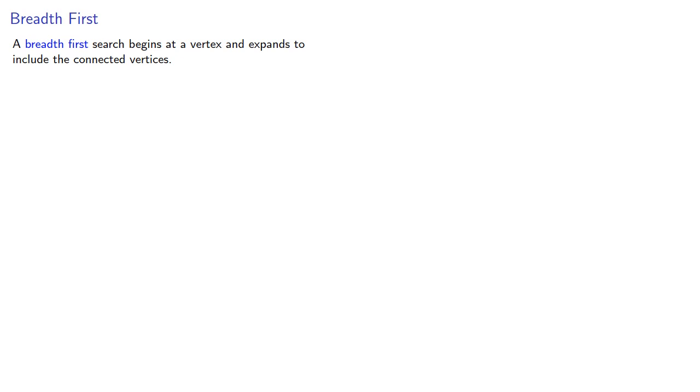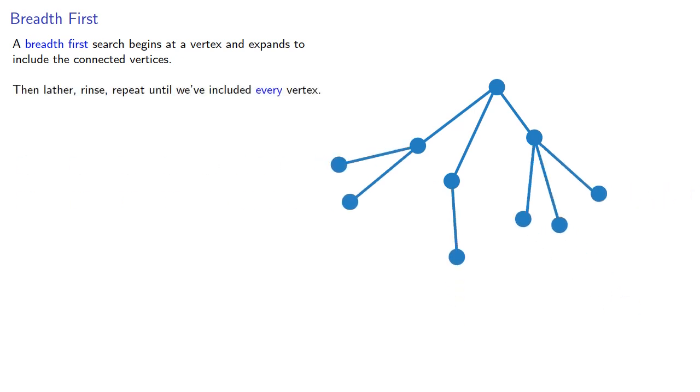A breadth first search would begin at a vertex and expand to include the connected vertices. Then, lather, rinse, repeat until we've included every vertex. Intuitively, if we're going to do this, we want to expand as quickly as possible so it makes sense to go to the vertex with the most edges incident.